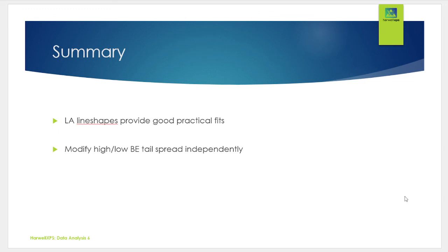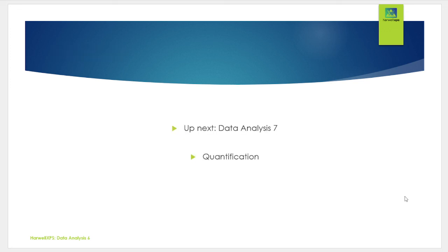In summary, the LA line shapes we've gone through here do provide good practical fits. You'll probably notice that historically in literature, Doniach-Sunjic line shapes have been used quite frequently; however, these don't tend to work quite so well with a lot of the backgrounds we use. LA line shapes are generally a little bit more configurable, and we would generally recommend that you use those, at least to start with. These line shapes allow you to modify the high and low binding energy tail spread independently, and really give you a feel for how your model is fitting and describing the data. Thank you for listening — up next we're going to be looking at quantification in part 7, so we'll see you there.